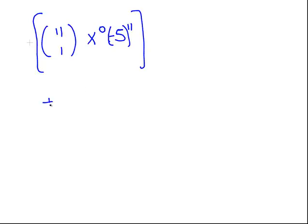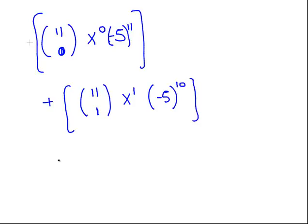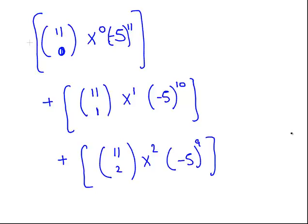The next term would be from 11 choose 1, x to the power of 1 times minus 5 to the power of 10, that's our next term. The next term after that will be from 11 choose 2, x squared, minus 5 to the power of 9, and so on. Now, I've picked very awkward numbers, but you get the idea.